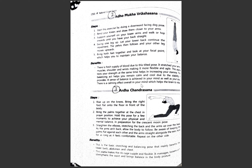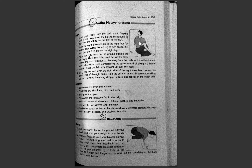The next asana is Ardha Chandrasana — you can see the half-moon shape in the pose. The name of an asana often hints at its form: Adho Mukha Vrikshasana means standing like a tree, while Ardha Chandrasana means forming a half moon with your body. The benefits include stretching and flexibility of muscles of the lower back, abdomen, and chest. It makes the ribcage supple, loosens and strengthens the waist, and brings balance in body posture.